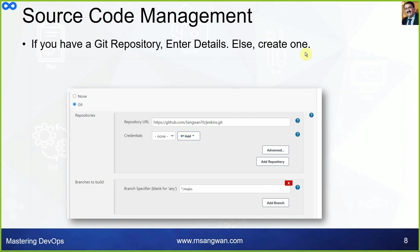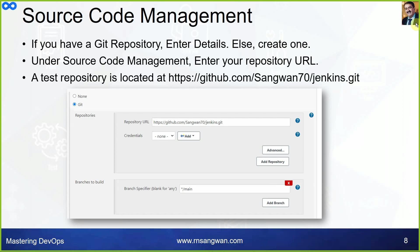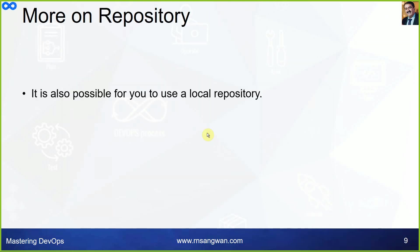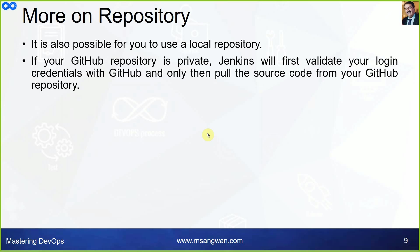If you have a Git repository, enter the details under Source Code Management. Enter your repository URL and, if credentials are required, specify those as well. If your GitHub repository is private, Jenkins will first validate your login credentials with GitHub and only then pull the source code from your repository.